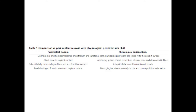This table shows a comparison of the physiological periodontium with that of peri-implant mucosa. The desmosome and hemidesmosome of the epithelium and junctional epithelium are linked with the contact surface in both. However, it is a bone-to-implant contact in peri-implant mucosa, whereas the periodontium involves cementum, alveolar bone, and gingival fibers in physiological periodontium.